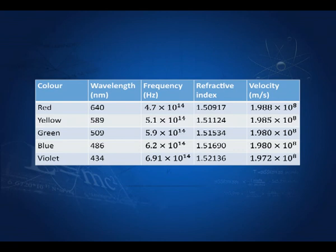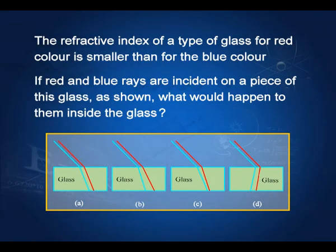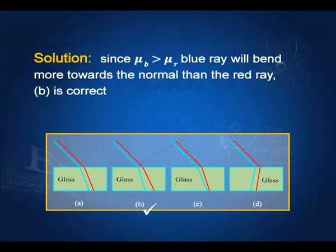In greater detail, we have the same information with additional columns for frequency and the velocity of light for each color. As the refractive index increases, the velocity of light decreases from red to violet. The effect of this is that when two rays — one blue and one red — enter a medium, they do not go parallel because they bend to different extents. Red bends less than blue, and blue bends more. The refractive index is not negative, so they don't bend the other way.